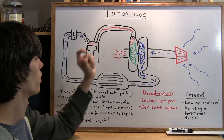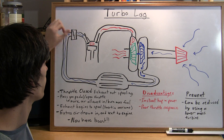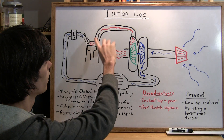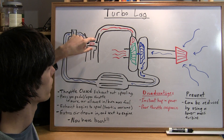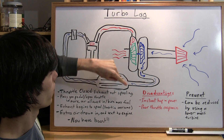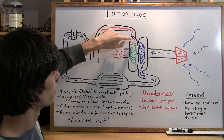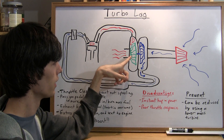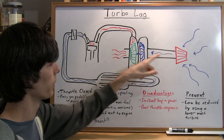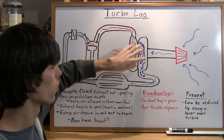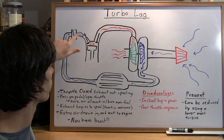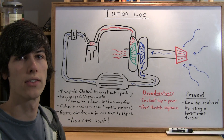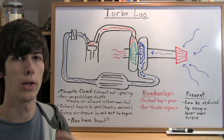Next you press on the gas, so your throttle body opens up and you allow more air to go in. Once you allow more air in, you're going to have more exhaust because you're going to burn more fuel. With more exhaust you're going to have greater pressure coming into the exhaust turbine and it's going to spool up. Once these turbines are spinning, the intake turbine draws in more air and sends it to your engine, so you'll have boost. From start to finish that process takes time, and this amount of time is called turbo lag.